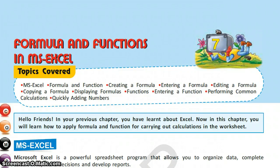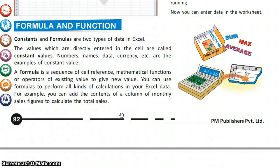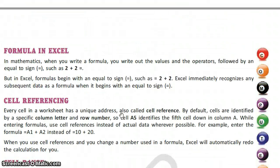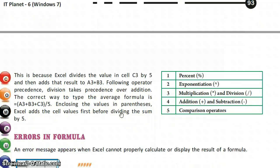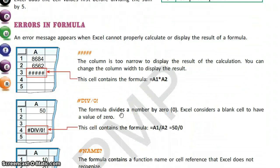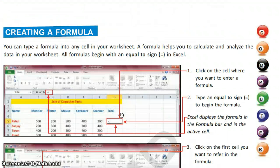Hello, dear students, welcome to my computer science class. We were discussing the chapter Formulas and Functions in MS Excel. This is the seventh chapter from the Class 6 computer science book IT Planet, and this is the second part. In the first part we studied the introduction: what is a formula, what are the different formulas, what is a function, cell reference, range, different operators, order of calculation, and different types of errors.